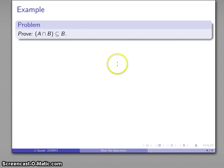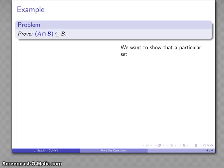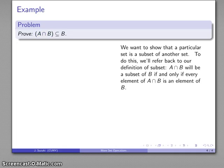Well, let's take a look at another simple proof. We're going to prove that A intersect B is a subset of B. So we want to show a particular set, A intersect B, is a subset of another set. And so for that, we should go back to our definition of subset. We have a subset relationship every time every element of the one set is an element of the second set.